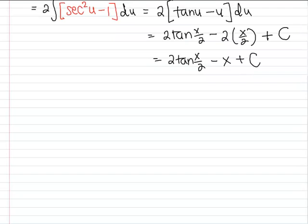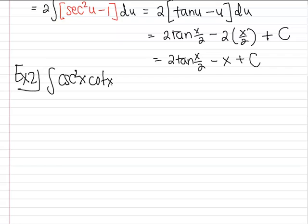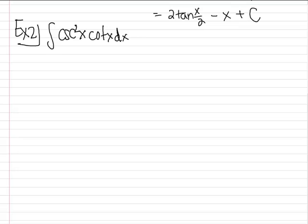Let's try another problem: integral of cosecant squared x times cotangent x, dx. I'd like you to stop and think about this for a second before I start. We can think of this as cosecant x times cosecant x cotangent x, but what should our choice for u be?